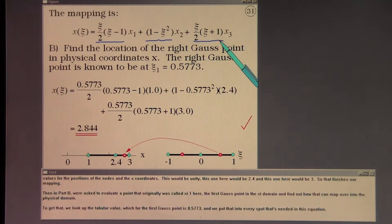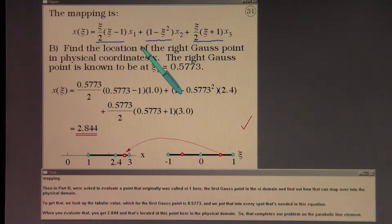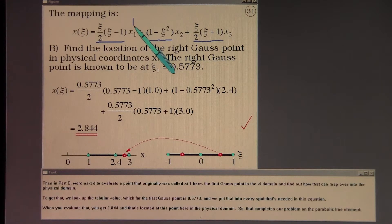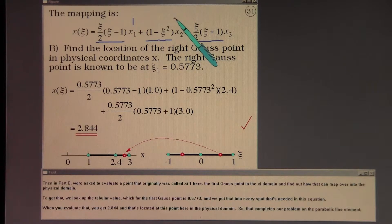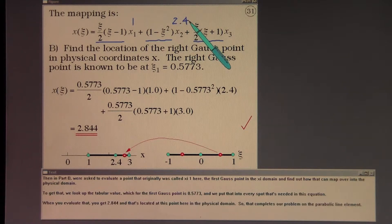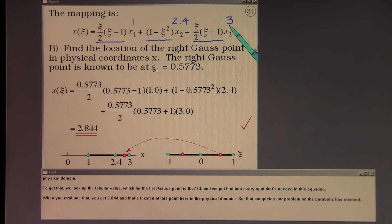To complete it we really should put in the numerical values for the positions of the nodes in the X coordinates. This would be unity. This one here would be 2.4. And this one here would be 3. So that finishes our mapping.